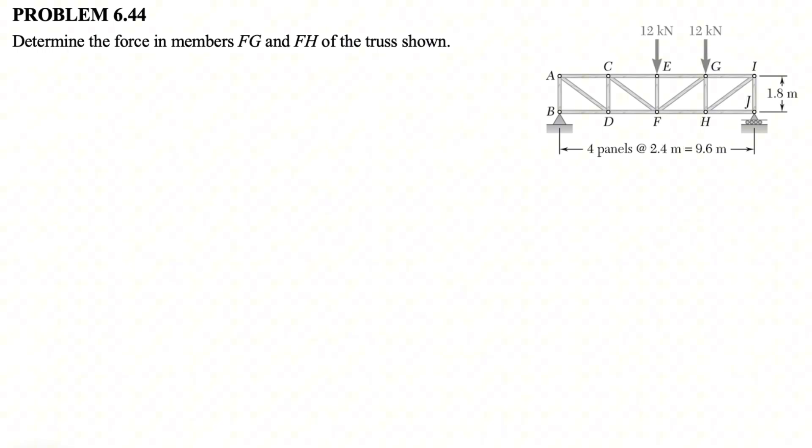We need to determine the force in members FG and FH of the truss that we can see. And since we are going for specific members in the truss, we can use the method of sections. Since we are looking for member FG and FH, the section that we're going to pick has to cross these two members. So it makes sense to do our section in this way. If we go with the free body diagram of the right side of the truss, we should be able to find all the unknowns that we have in here.